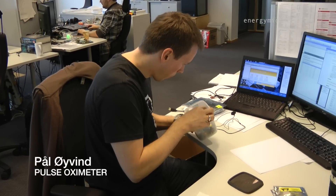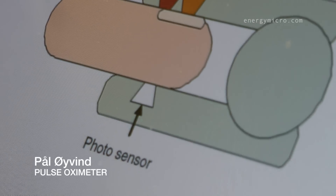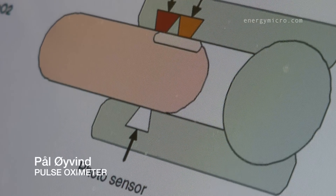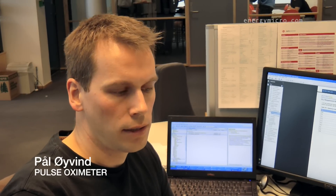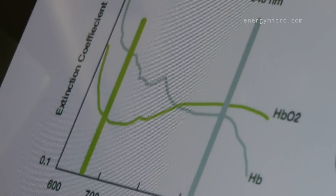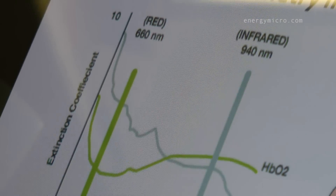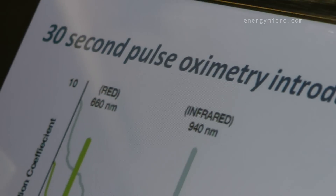I'll make a pulse oximeter, glowing a light through the finger — a red light and then an infrared light. And by measuring the ratios between them, you can measure both the pulse and the oxygenation levels.